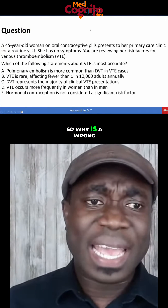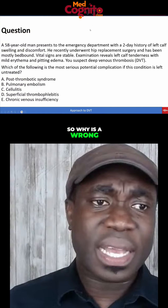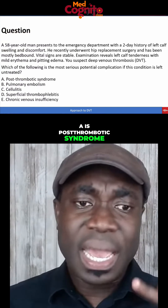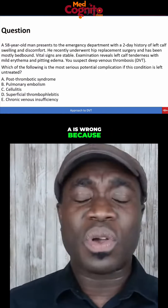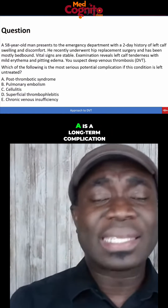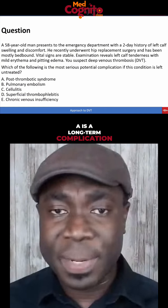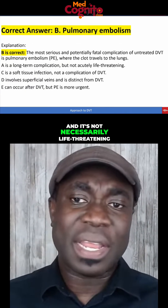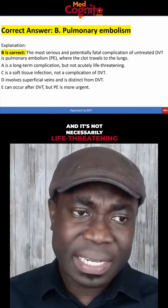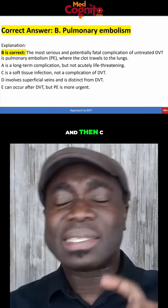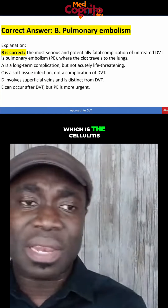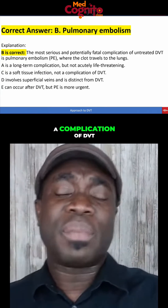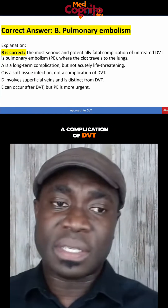So why is A wrong? A is post-thrombotic syndrome. A is wrong because it is a long-term complication and not necessarily life-threatening. And C, cellulitis, is a soft tissue infection and is not a complication of DVT.